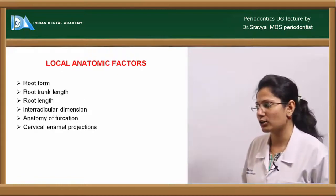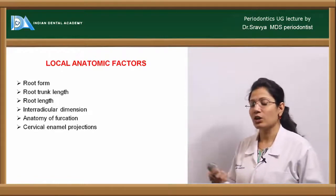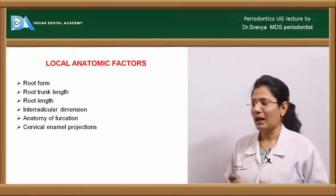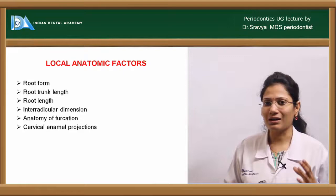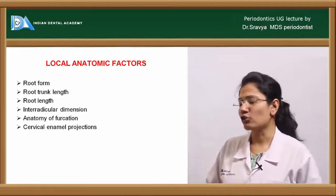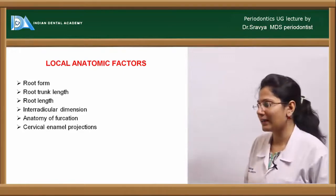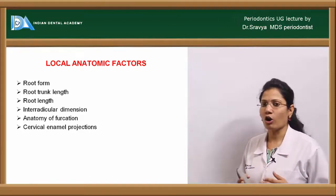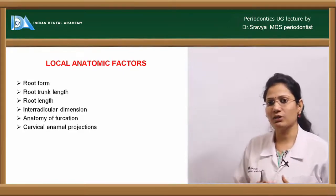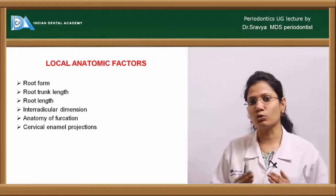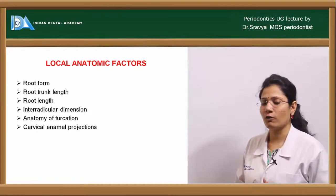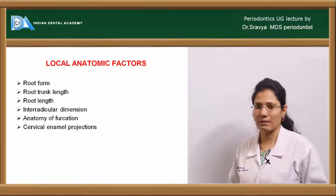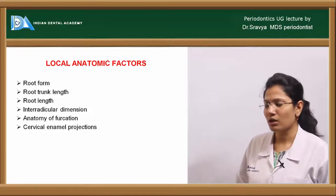The second factor involves local anatomical factors related to the tooth itself. These include root form, root trunk length, root length, interradicular dimension, amount of divergence between the roots, anatomy of the furcation, and cervical enamel projections.